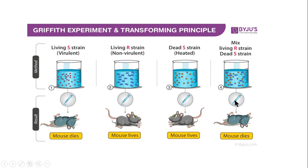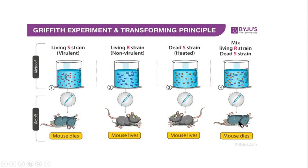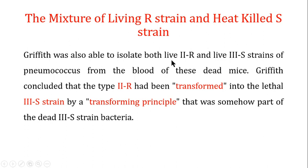What was in the mixture of the living R strain and the heat-killed S strain? What Griffith discovered was that when he took blood from these dead mice — in which he had injected the mixture — he was able to isolate both the live rough strain and the smooth strain of Pneumococcus. Griffith concluded that the rough strain had been transformed into the lethal smooth strain by a transforming principle that was somehow part of the dead S strain of the bacteria — something was transferring from the heat-killed smooth strain to the live rough strain.